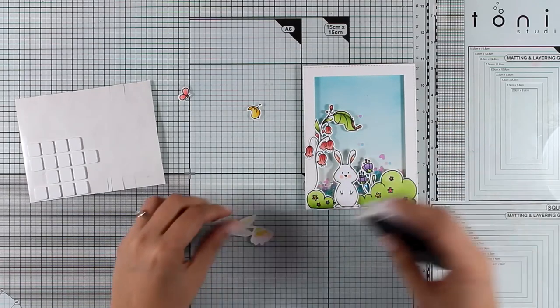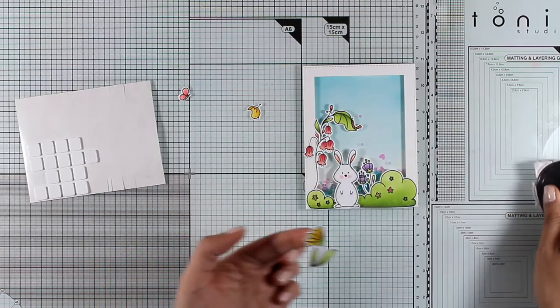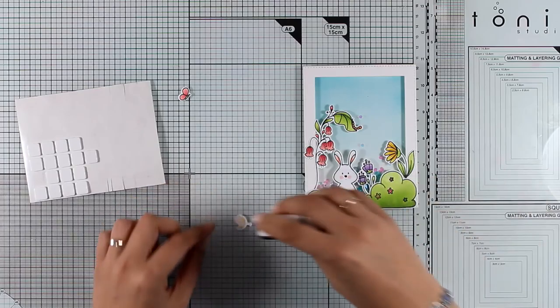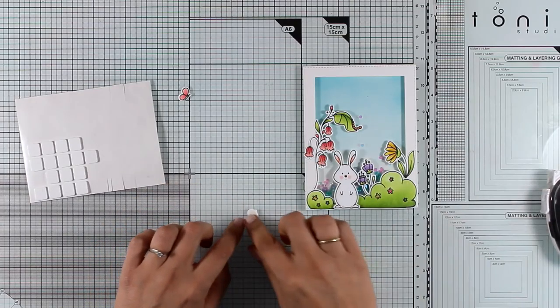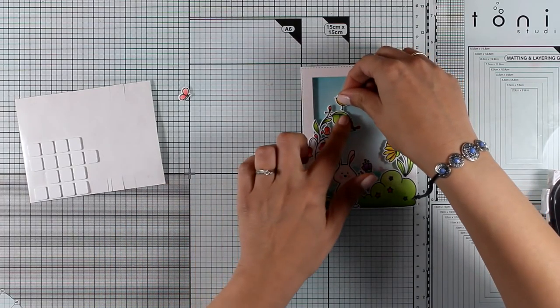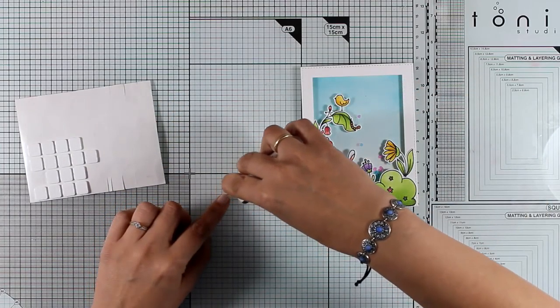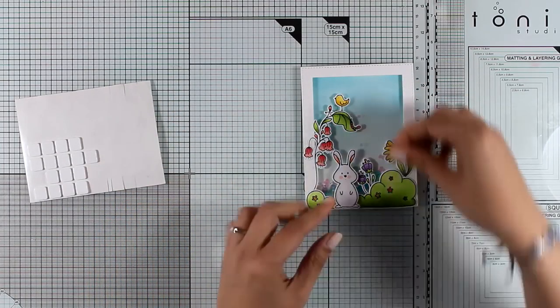As the card is now, there is no space to add the sentiment. So either you have to cut out a word as a sentiment or just stamp a sentiment on a strip of paper and stick it on top of your shaker card. Another option is to stamp the sentiment before you put everything together, on top of that sky where I have all that empty space.